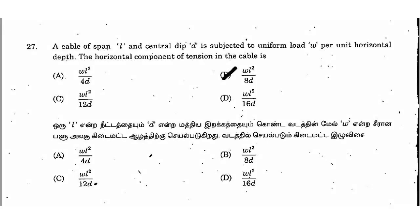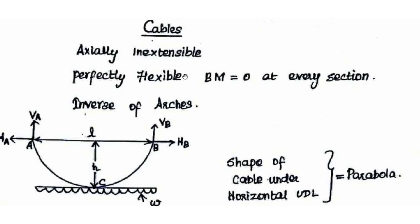Let's talk about the TNPCEE 2015 question paper. There are already 26 questions. A cable of span L and central dip D is subjected to uniform load W per unit horizontal length. The horizontal component of tension in the cable — the right answer is WL² by 8D. This is an important question in cable structural analysis.